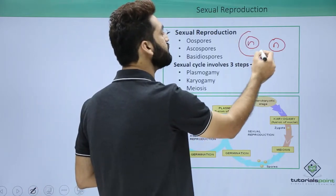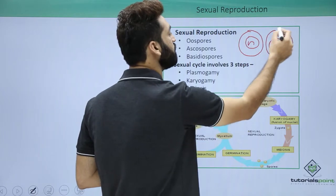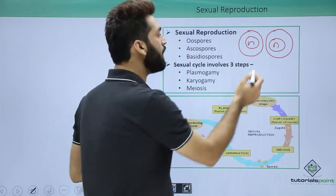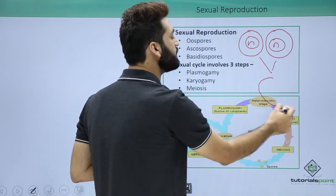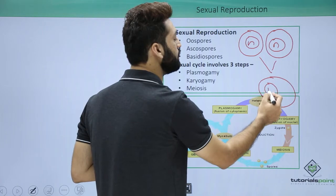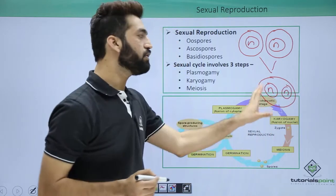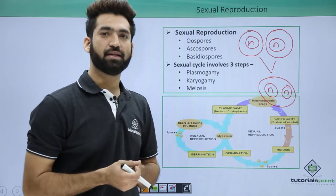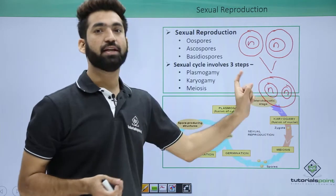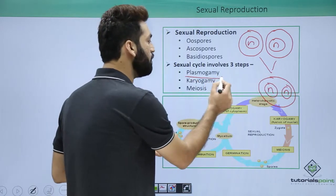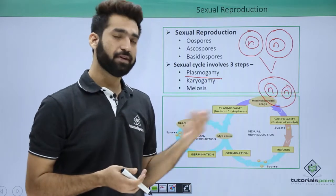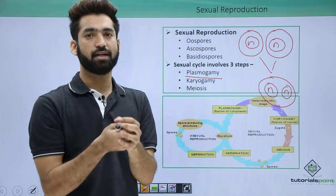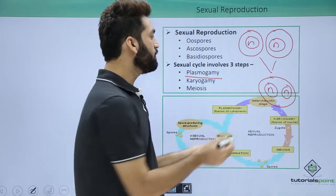Each fungus has a cell with one nucleus. When both cells fuse, the cytoplasm fuses but the nuclei are still not together. This process is called plasmogamy — the very first step of sexual reproduction in fungi, where the cytoplasm of both fungi fuses.